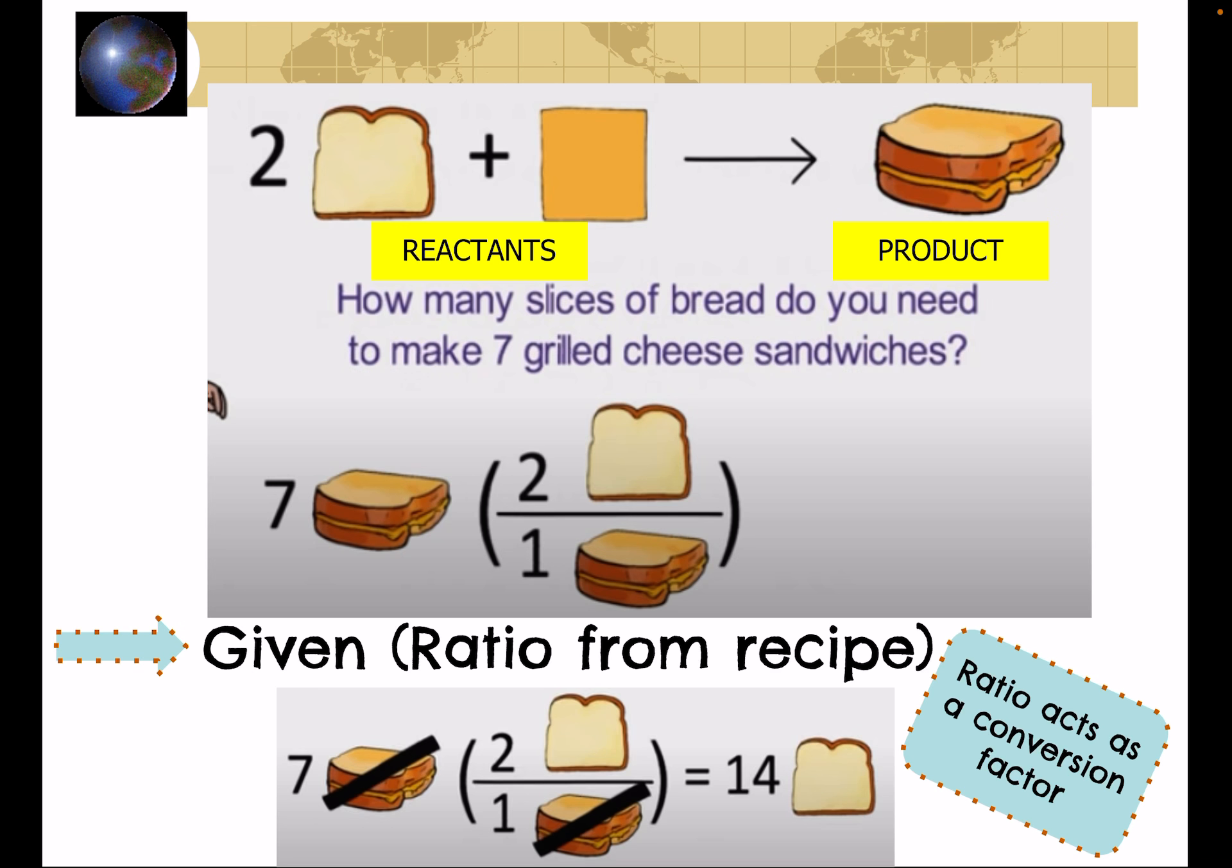And then you notice what happens down here at the bottom. The sandwiches cancel just like when we've done converting, and we end up with seven times two divided by one: 14 pieces of bread. Now the setup here will really help you when you transition into chemical equations.